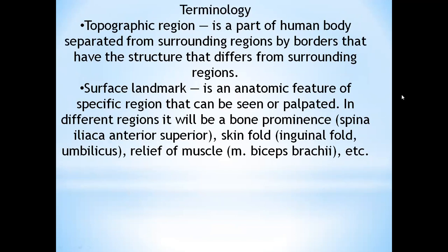Topographical region: it is a part of the human body separated from surrounding regions by borders that have a structure that differs from surrounding regions. Surface landmark: it is an anatomical feature of a specific region that can be seen or palpated. In different regions, it will be a bone prominence — spina iliaca anterior superior — skin fold, inguinal fold, umbilical, relief of muscles, biceps brachii, etc.